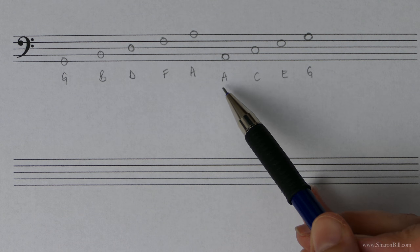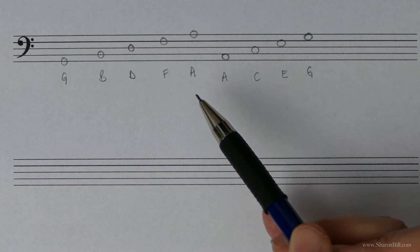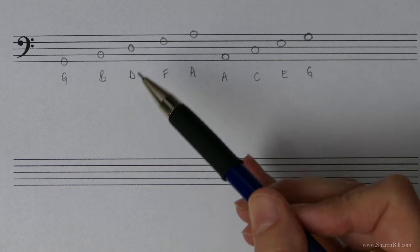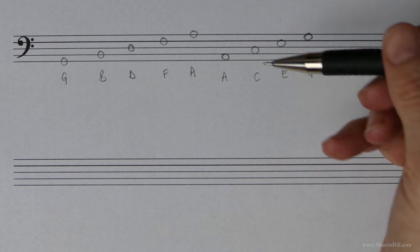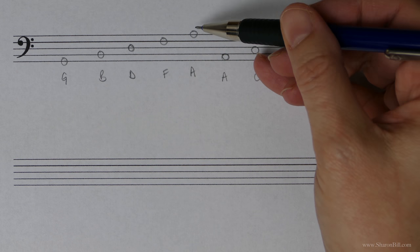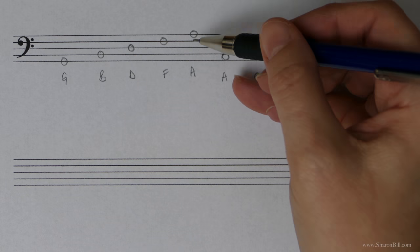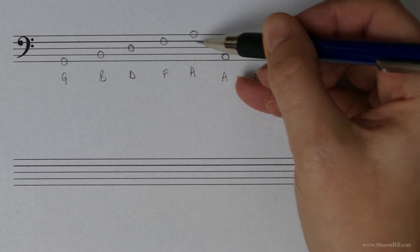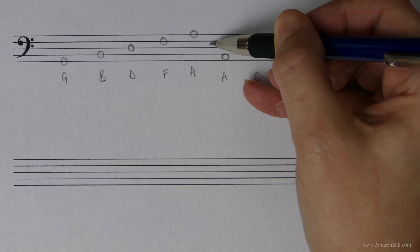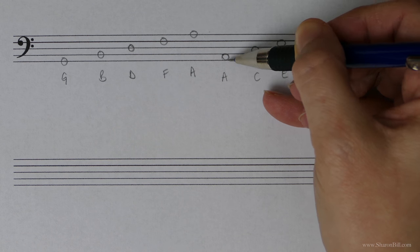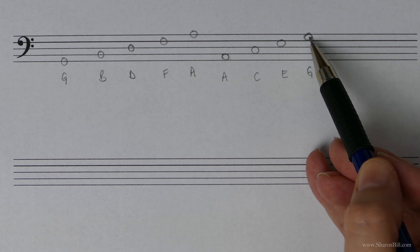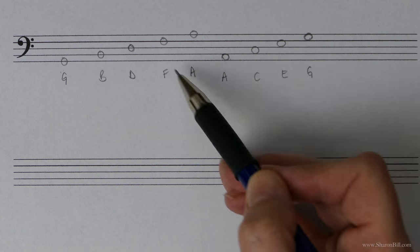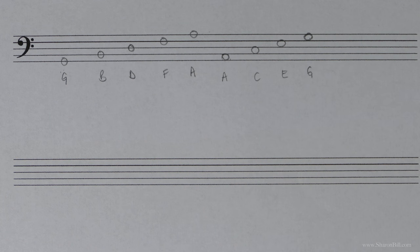We only ever use notes A, B, C, D, E, F, G, and then the cycle starts round again. That means every eight notes we have a repetition. They're an octave apart - eight notes apart on the instrument. So if you count from this A to this A: one, two, three, four, five, six, seven, eight. They are an octave apart. We've got a G here and a G here - also eight notes apart, and that keeps cycling around the range of the instrument.